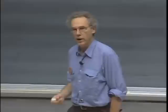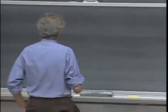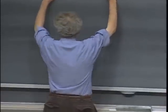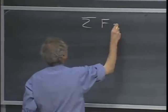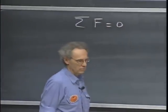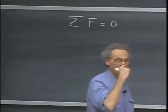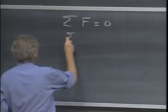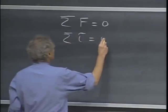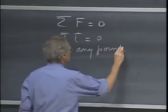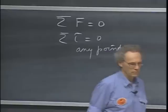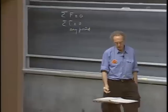Today I want to discuss in detail what it takes for an object to be in complete static equilibrium. For an object to be in static equilibrium, it is not enough that the sum of all forces is zero. What is also required is that the sum of all torques relative to any point you choose is also zero. That will be the topic today.